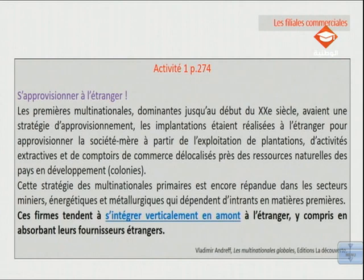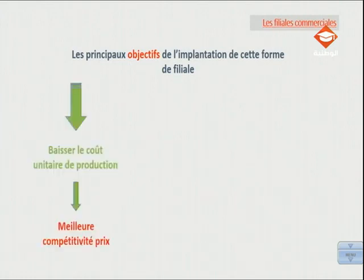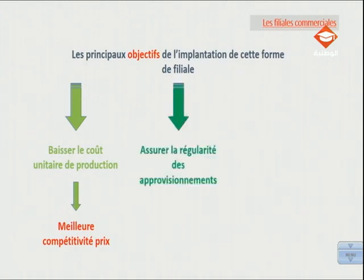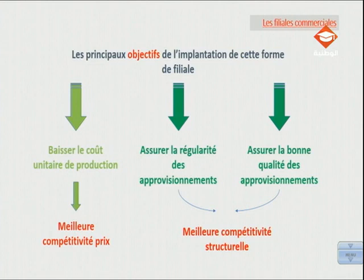Par exemple, si une firme achète complètement son fournisseur, c'est une intégration verticale. Donc les mobiles de l'implantation des filiales commerciales se confondent avec les mobiles de la concentration verticale en amont, c'est-à-dire en remontant la filière. Les principaux objectifs sont : baisser le coût unitaire de production en éliminant la marge du fournisseur afin d'obtenir une meilleure compétitivité-prix, et assurer la régularité et la bonne qualité des approvisionnements pour améliorer la compétitivité structurelle ou hors-prix.